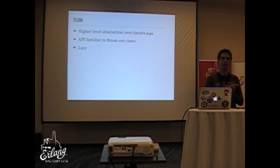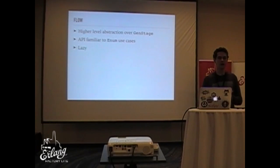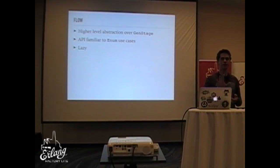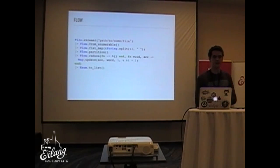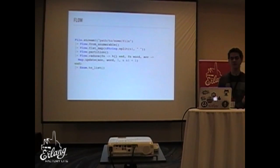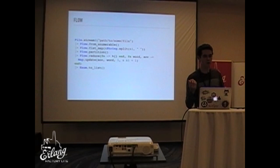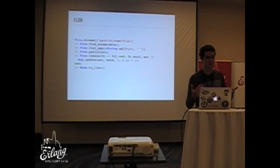Let's talk about Flow, which is an abstraction built on top of GenStage. It provides a familiar API for people used to working with Enum or Stream — they'll see almost the same code and can think it works the same way. But importantly, it provides this clean API while still being lazy and very concurrent. So Flow looks like this: you get a file stream, open it — just a representation and abstraction of the file — turn it from an Enumerable into a Flow.